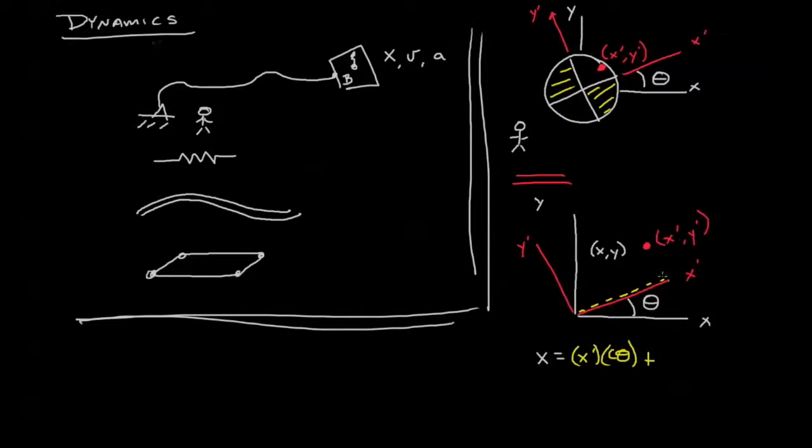Plus you're going to have some influence due to what's happening in the y direction as well. That's going to be a minus sine theta times y', and in this way we can find out what the x coordinate is.